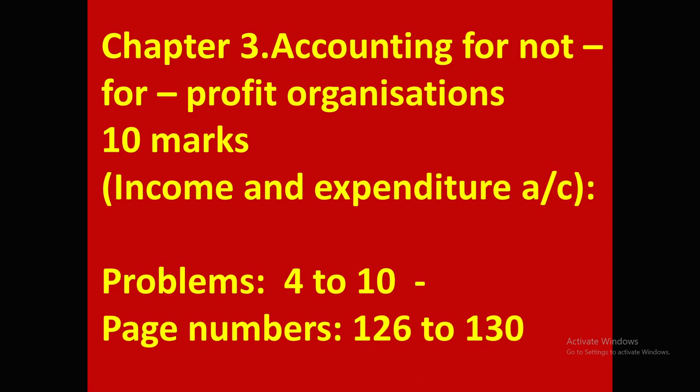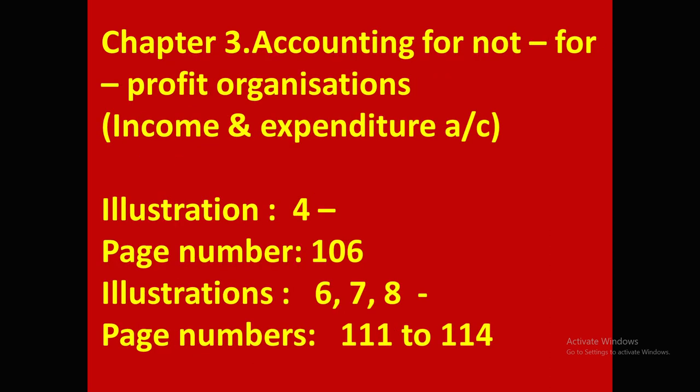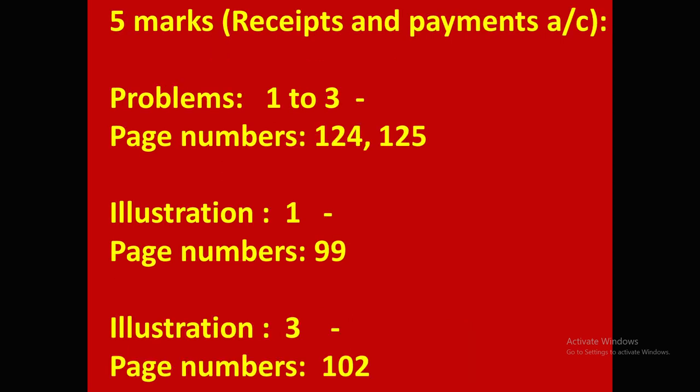Now Chapter 3 — Accounting for Not-for-Profit Organizations. From this chapter, he may give two problems. One problem is compulsory for 10 marks on Income and Expenditure Account. The related problems are 4 to 10 (pages 126 to 130). Illustrations to learn: Illustration 4 (page 106), Illustrations 6, 7, 8 (pages 111 to 114). For the 5-mark problem on Receipts and Payments Account: Problems 1 to 3 (pages 124–125), Illustration 1 (page 99), Illustration 3 (page 102).